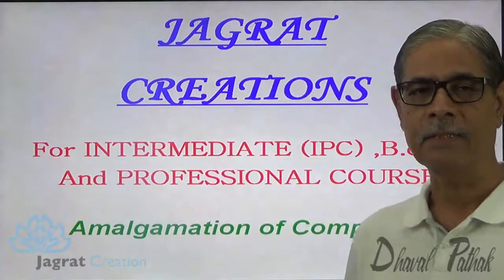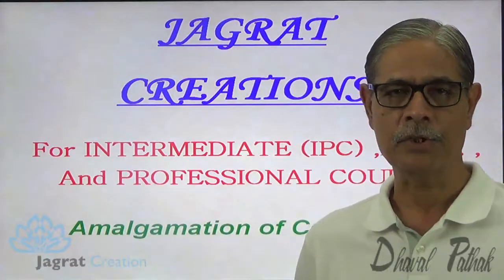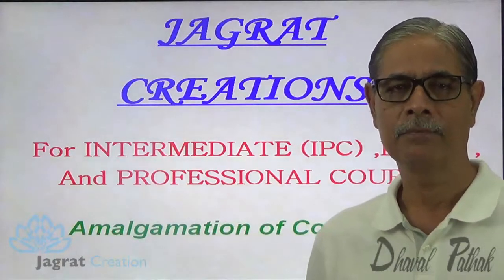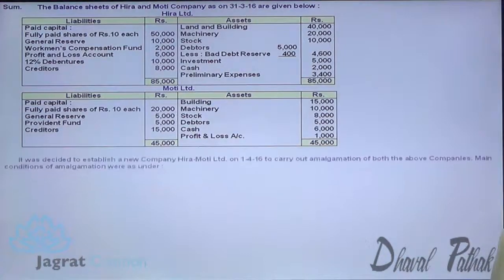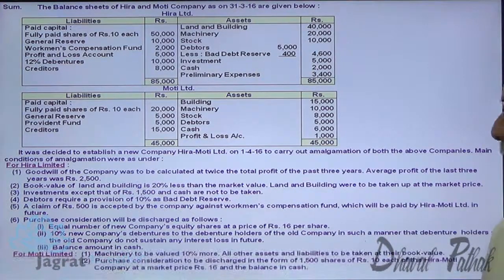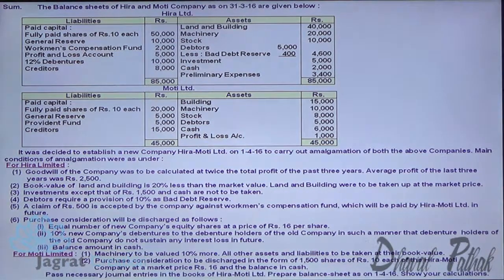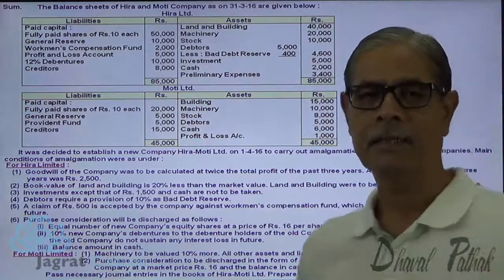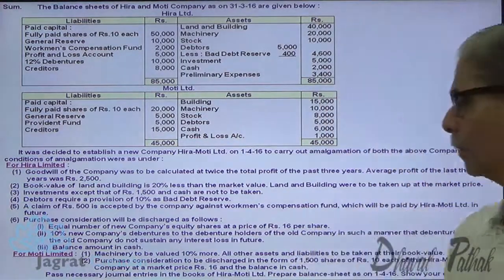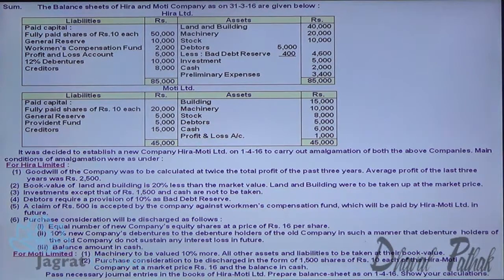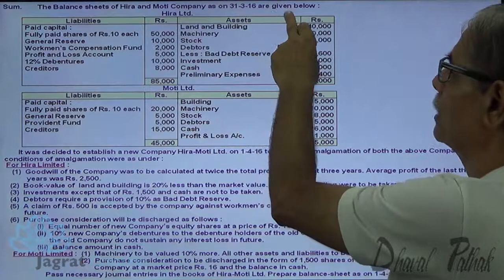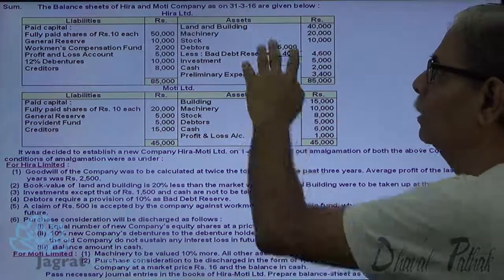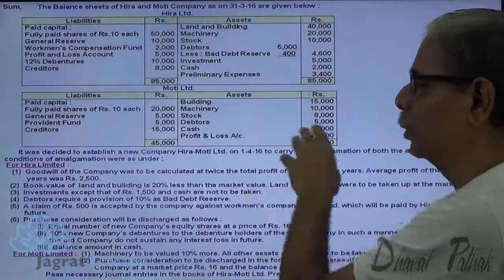Now I want to solve a sum on amalgamation of companies. You can pause the video and read the sum, but let me start. The balance sheet of Hira Limited and Muthi Limited as on 31st March 2016 are given. This is the balance sheet of Hira Limited and this is the balance sheet of Muthi Limited.